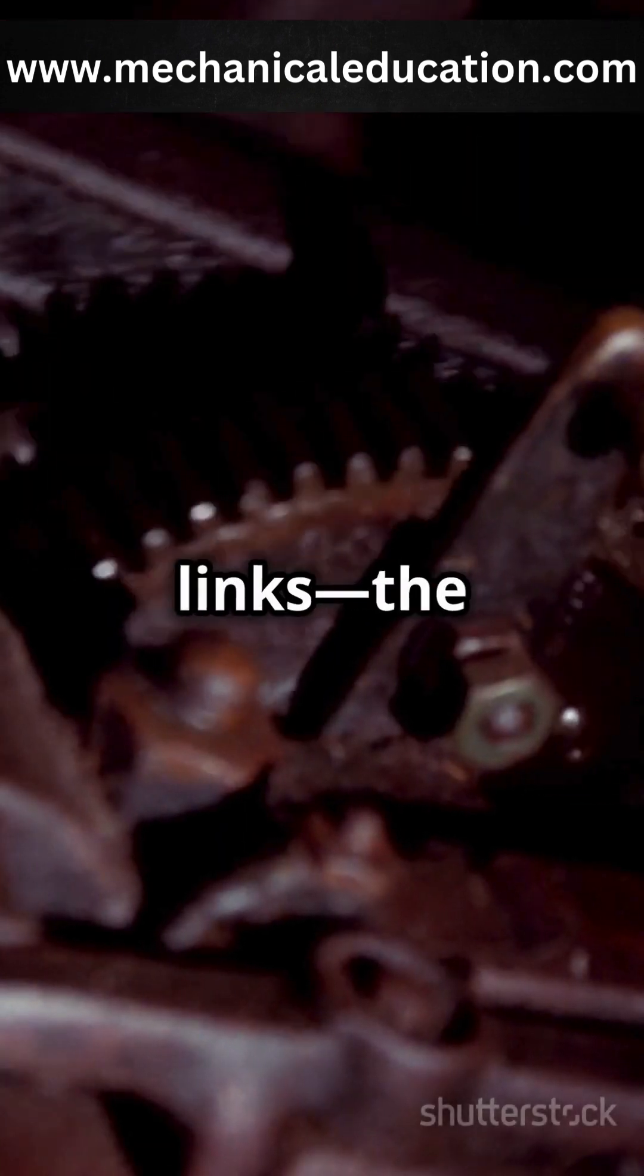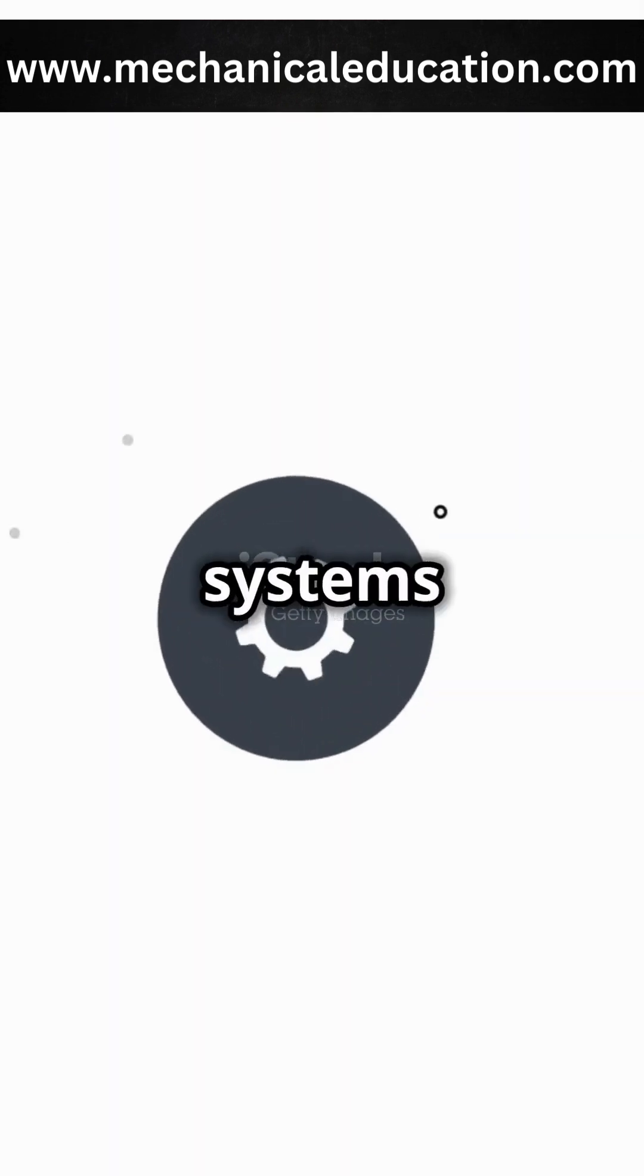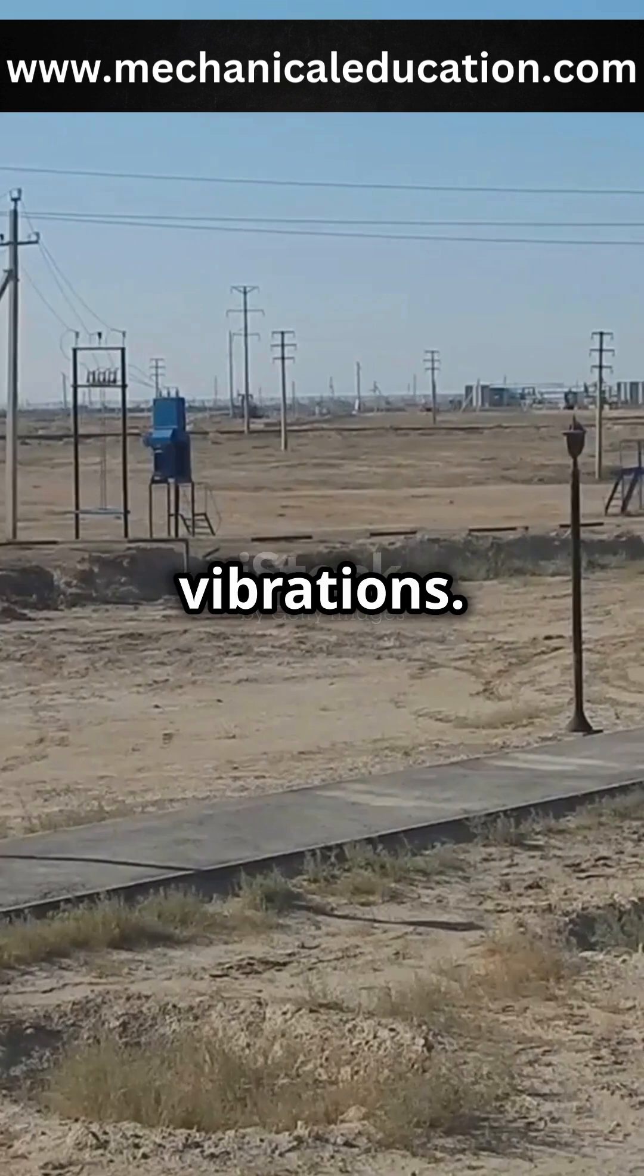Next, rigid links—the strong, unyielding members. Found in gear systems and engines, they maintain their shape and ensure precise motion. However, they're less adaptable and can struggle with shocks or vibrations.